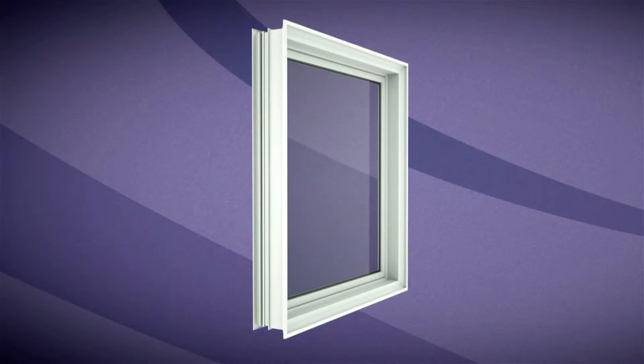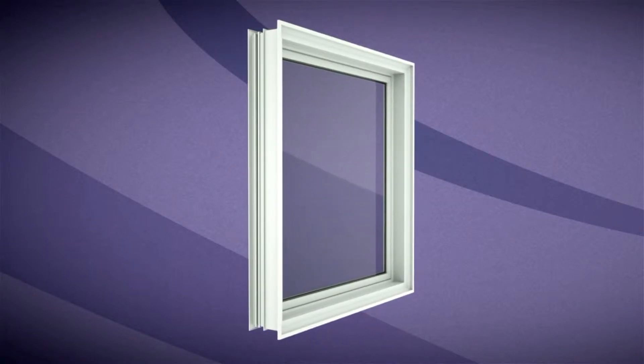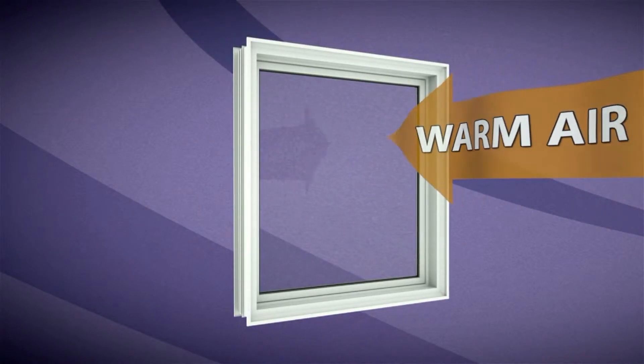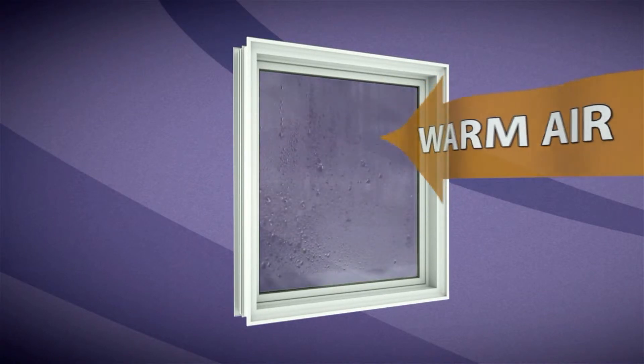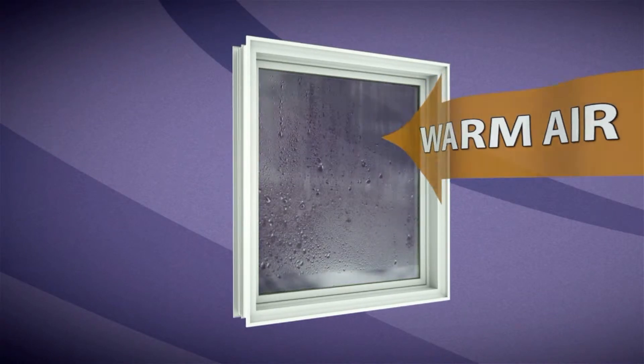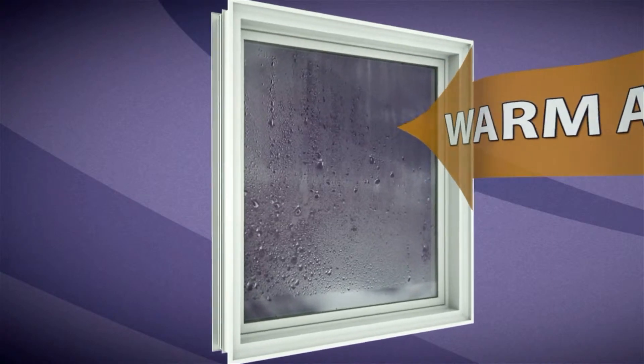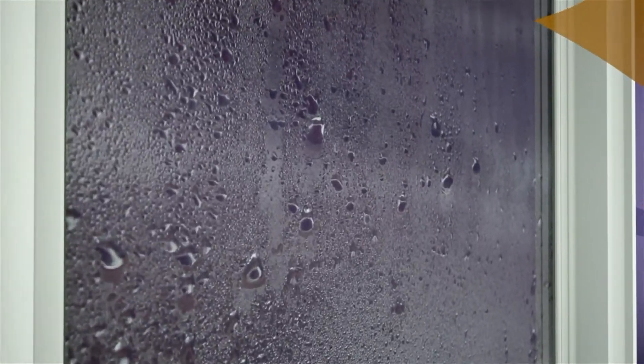The formation of moisture, or condensation, on the inside surface of a window's insulated glass unit occurs when the surface temperature of the interior side of the window's insulated glass is lower than the dew point of the humid air around it. Moisture in the air condenses naturally when contact occurs with colder surfaces.